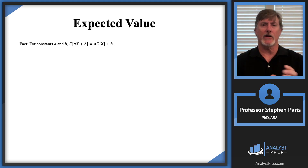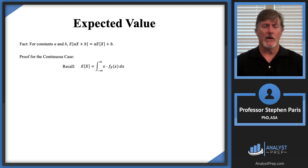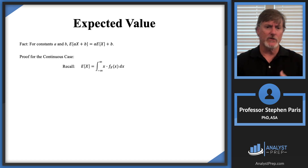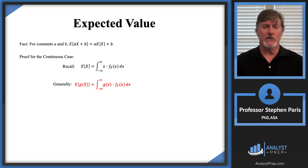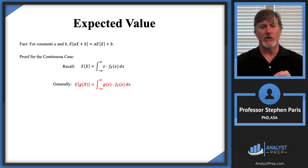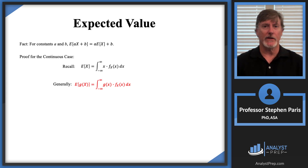Let's look at what's happening in the continuous case. The expected value of the random variable is the integral over all values in the support of x times the density function. More generally, the expected value of any function G(X) is an integral where the integrand is G(x) times the density function. When G(X) = X, you recover the standard formula for E[X].